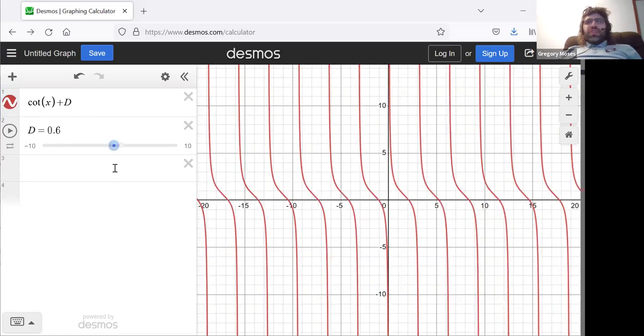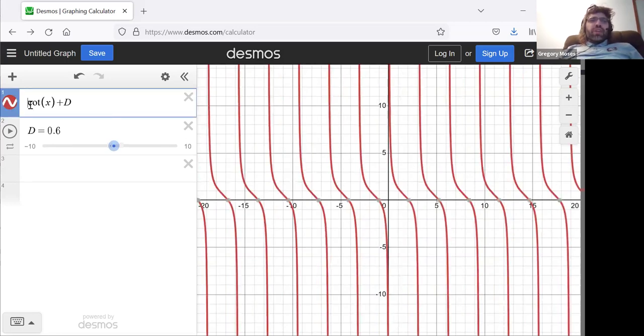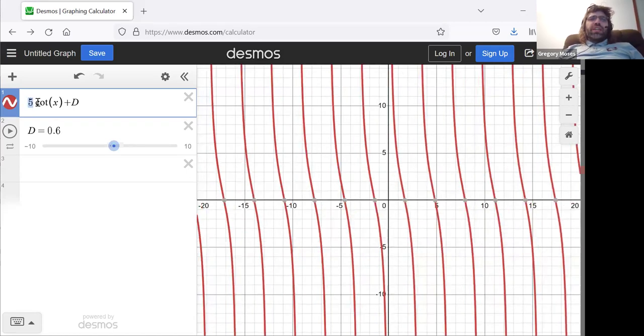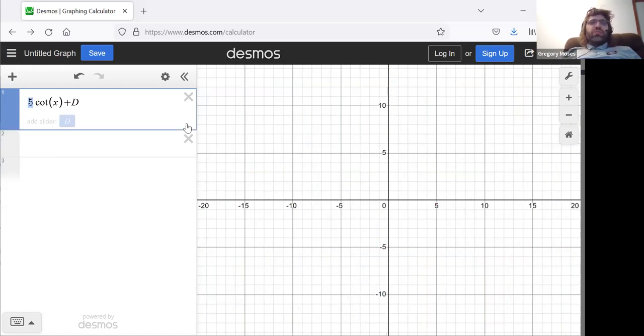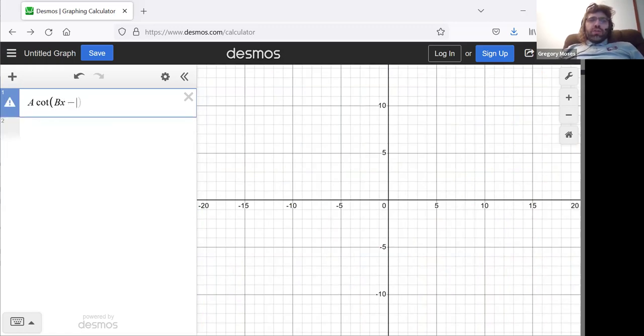So, just as with the tangent, these parameters don't have names when we're giving the cotangent. Like, if we put a 5 in front of that cotangent, this 5 is not called the amplitude, as it was with the sine and the cosine. But this all works the way we've seen it work three times already.